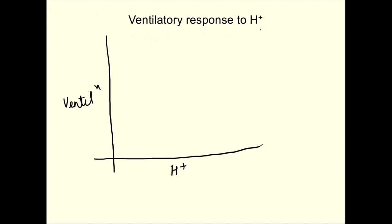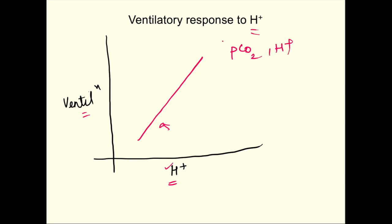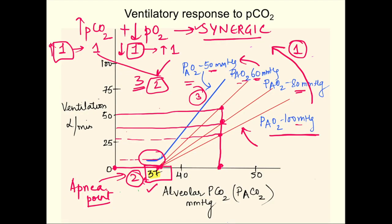Finally, ventilation increases linearly with rising H+ ion concentration. Since hydrogen ion changes affect the functioning of all cells, pH is tightly controlled, hence the linear ventilatory response. When both pCO2 and H+ are increasing simultaneously, the effect on ventilation is additive — unlike the synergistic relationship between pCO2 and pO2. That concludes the chemical regulation of respiration.